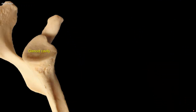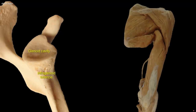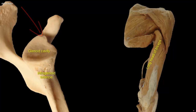Just below the glenoid cavity is the infraglenoid tubercle, which may be depressed into a fossa, as shown here. The infraglenoid tubercle gives attachment to the long head of triceps. Remember that the long head of biceps is attached to the supraglenoid tubercle, and both the supraglenoid tubercle and the long head of biceps lie within the capsule of the shoulder joint, while the infraglenoid tubercle and the origin of the long head of triceps lie outside the capsule.